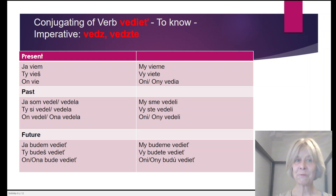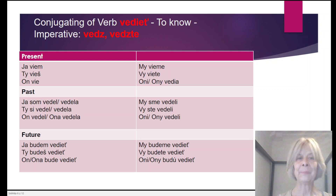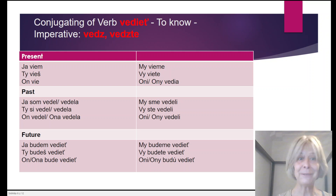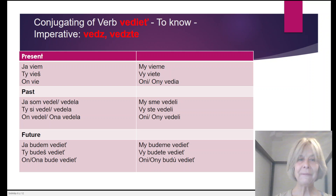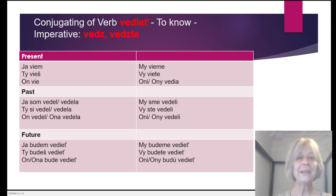Negative is formed exactly the same — just place 'ne' before the verb. Ja ne viem. Very important word — I don't know: Ja ne viem. For present tense: Ty nevieš. On nevie. My nevieme. Vy neviete. Oni nevedia.